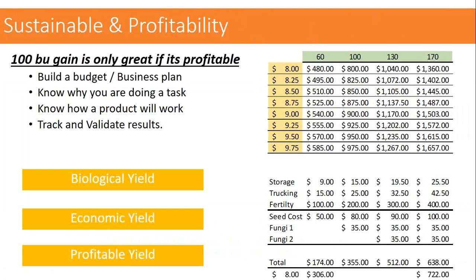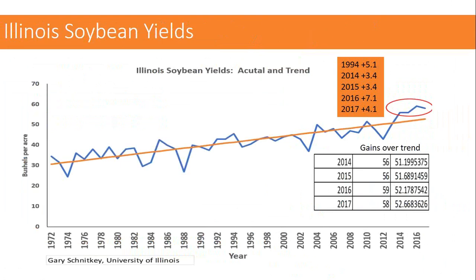We've got to understand why we're doing the practices we're doing. If we add a new application or product, we might get biological yield — bigger roots, a greener plant — but no yield response. Something else might give us economic yield, but no profitable yield. Ultimately we want profitable yield. We really have to build that budget and business plan rather than just hoping the environment will favor it.